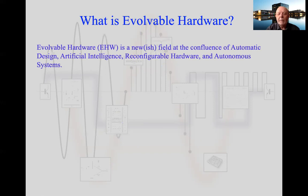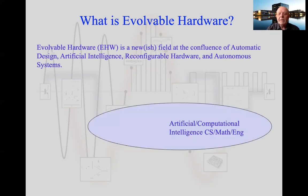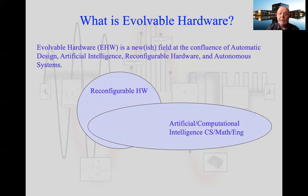So what is evolvable hardware? It's kind of what it says on the tin — it's looking at using evolutionary techniques, computational intelligent techniques, applied to various hardware systems. It's a mixture of a number of topics. One is looking at artificial intelligence or computational intelligence, bio-inspired algorithms, and applying those to some sort of hardware which can change — reconfigurable hardware. One obvious example of that, which we'll talk about in part two of this lecture, is FPGAs — hardware which we can reconfigure using software.